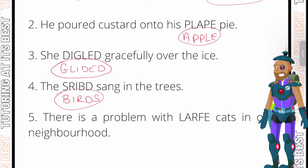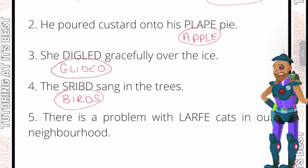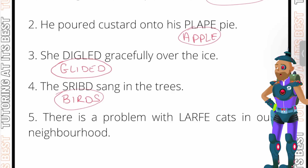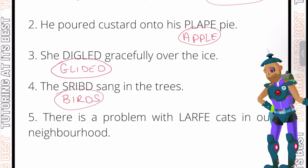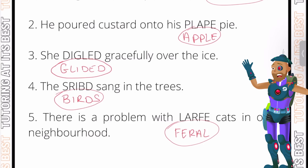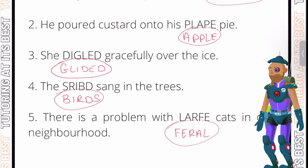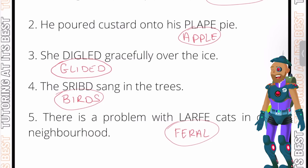Finally, question five: there is a problem with something cats in our neighbourhood. The context is around cats in the neighbourhood — they don't appear to be domesticated. So the word here is 'feral', which means wild. This is a great way to not only unscramble words but also learn new vocabulary. I hope that example was clear.